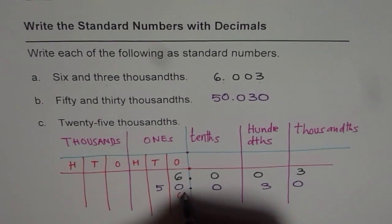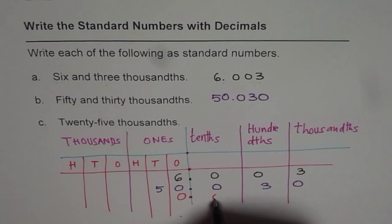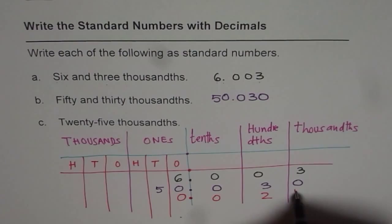So we have zero here, decimal, and then twenty-five thousandths. So zero twenty-five. Since the number has to end at thousandths, we have zero point zero two five as the answer.